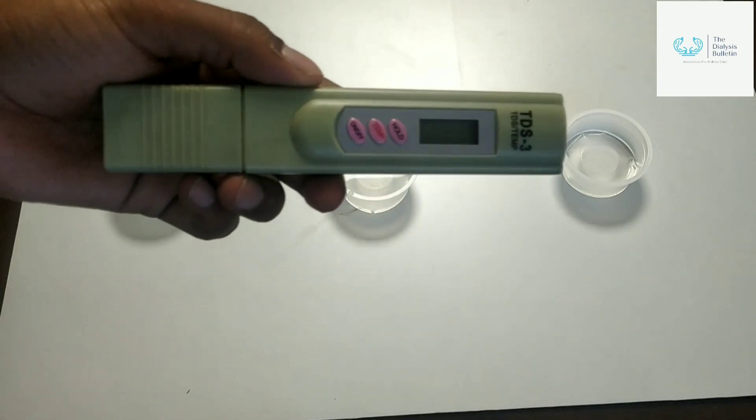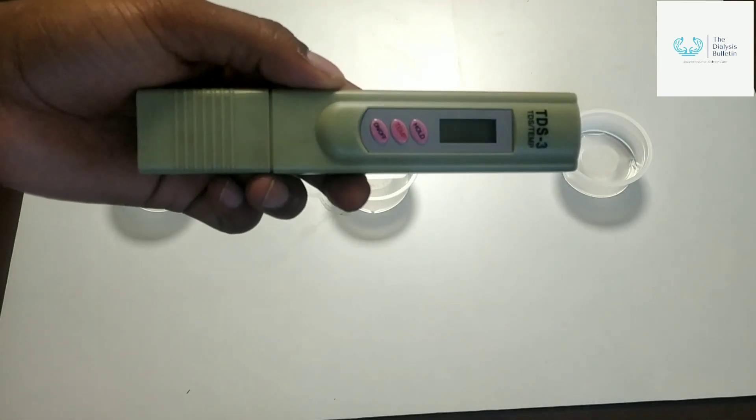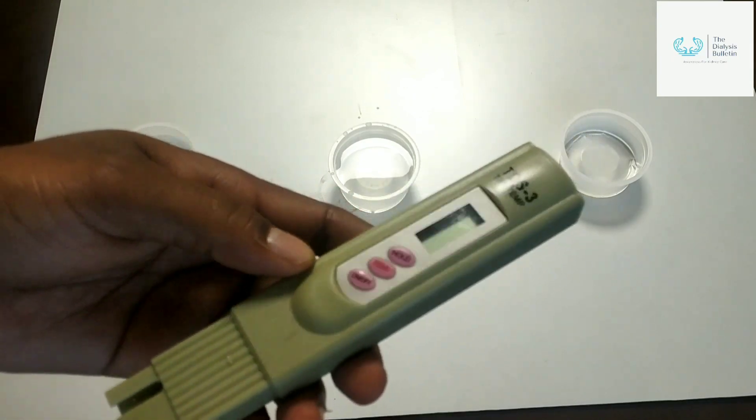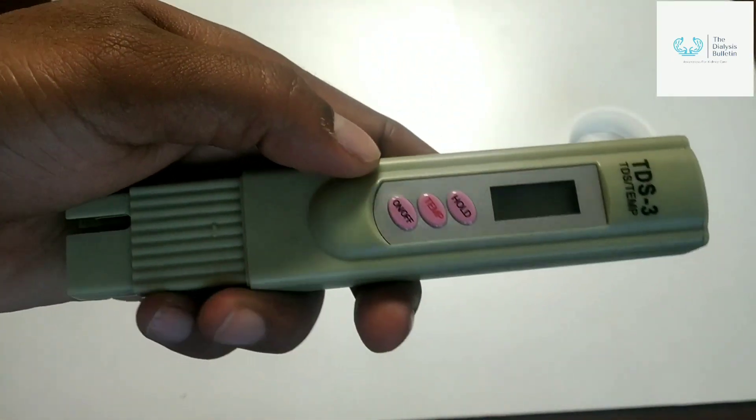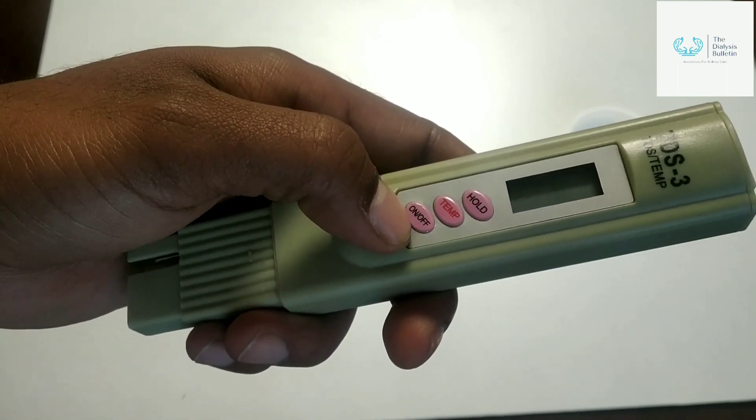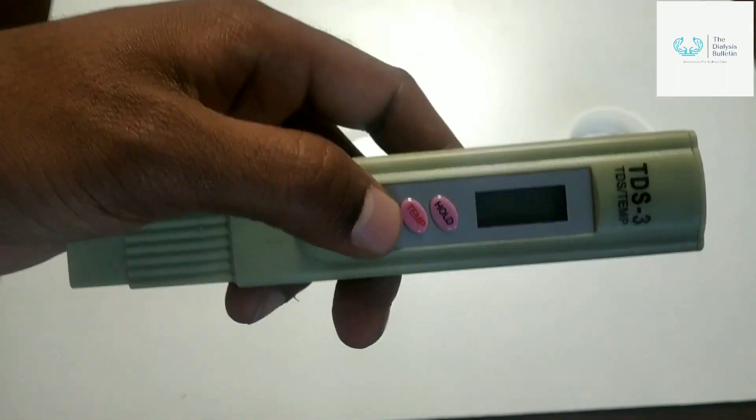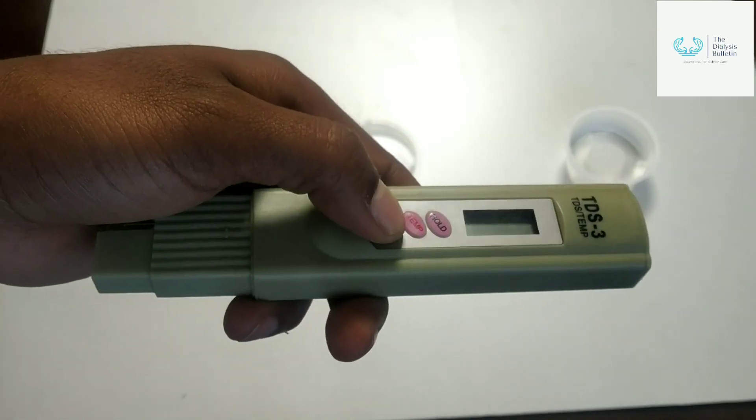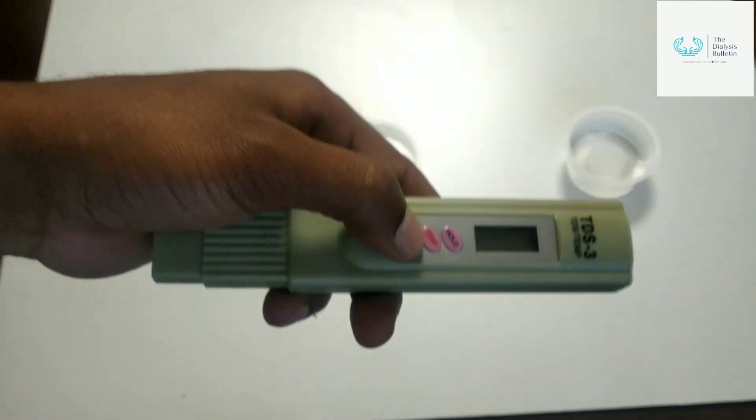For that we need a TDS meter like this. There are three functions over here: one is hold, second is temperature, and third is on/off. When you check the TDS of the water, you should start over here.